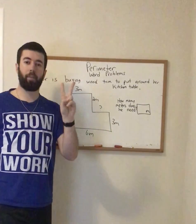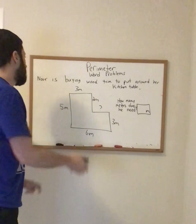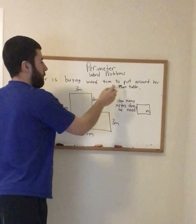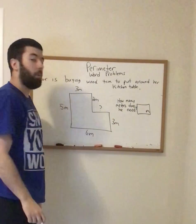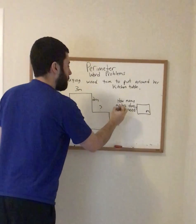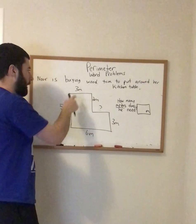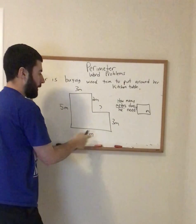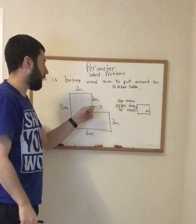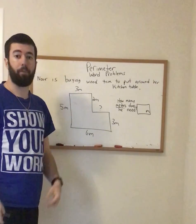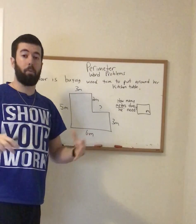Now I'm going to read it a second time to see if there are any numbers I'm dealing with. Noor is buying wood trim to put around her kitchen table. How many meters does he need? Well, I know that I'm using the term meters, and I see on my picture that I have number 3, number 5, number 6, number 3, but I'm missing one. So I'm going to have to figure that one out before I start my problem to figure out my whole perimeter.